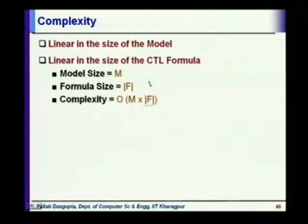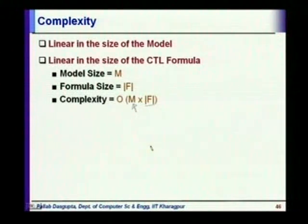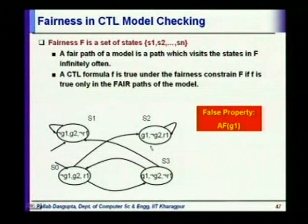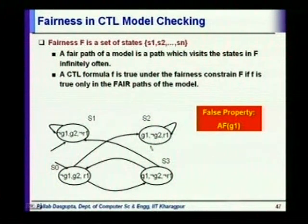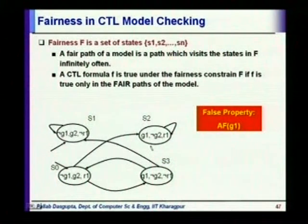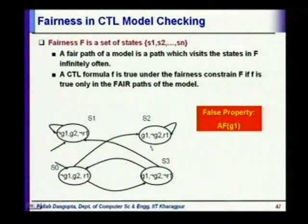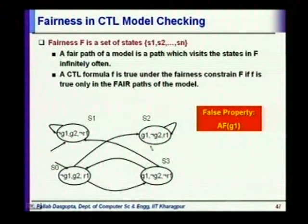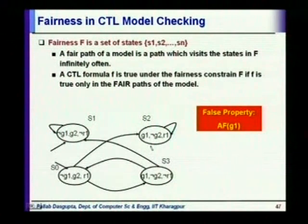Still, in all of these problems, the main issue is the size of the state space — that is what causes capacity problems. Fairness is defined as follows: fairness F is a set of states s1, s2, ..., sn. A fair path of a model is a path which visits the states in F infinitely often. A CTL formula is true under the fairness constraint if it is true only on the fair paths of the model.